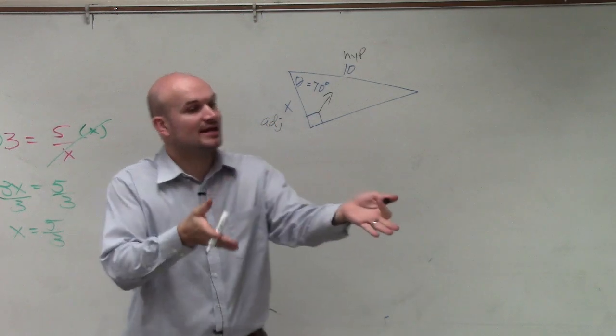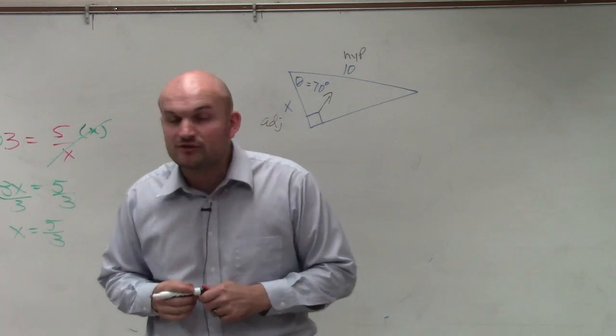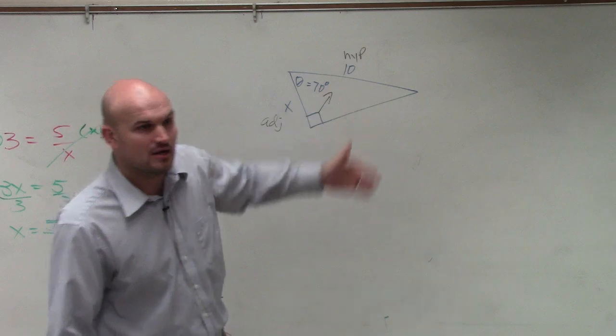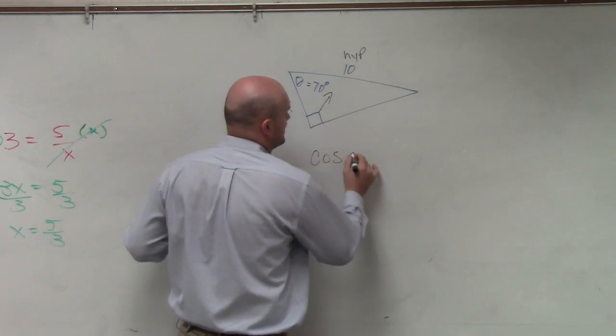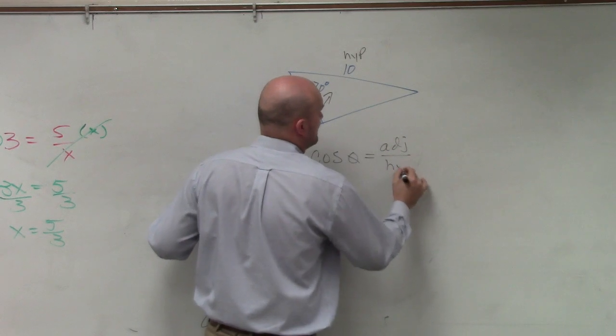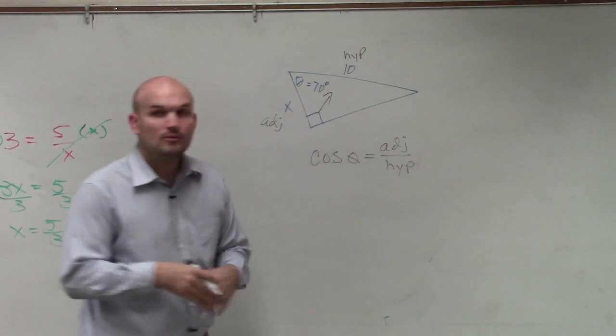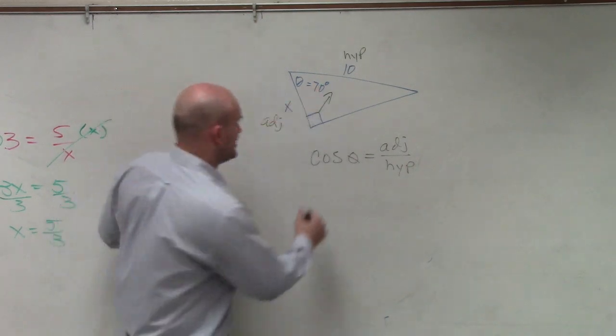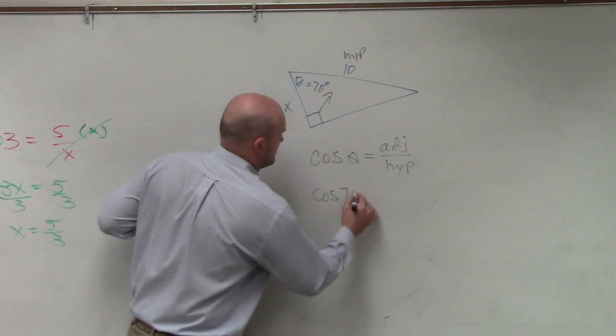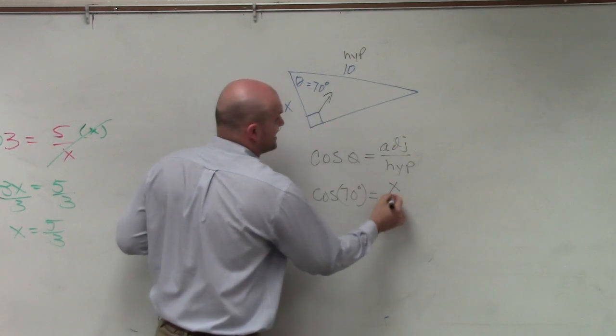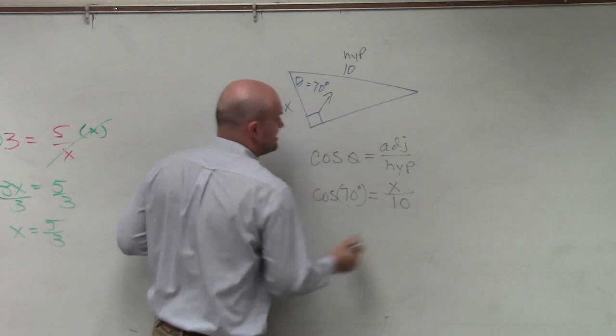So now we need to look back at our table and see which trigonometric function only deals with the adjacent side and the hypotenuse? Cosine. So I can say cosine of my angle theta equals adjacent over hypotenuse. Now we just plug in the information that we know: theta is 70 degrees, my adjacent side is x, and my hypotenuse side is 10.